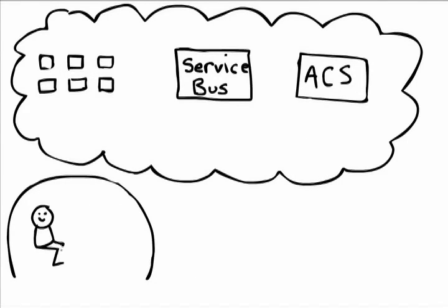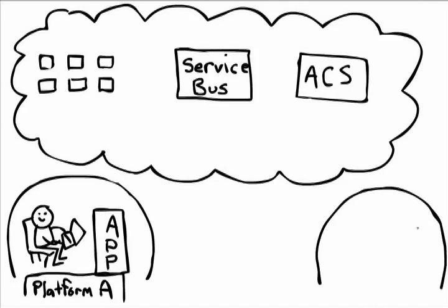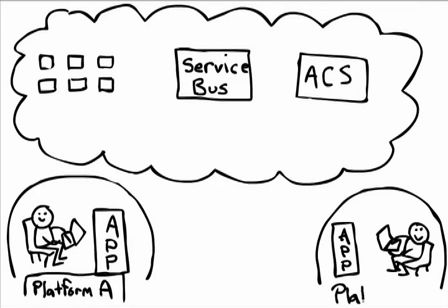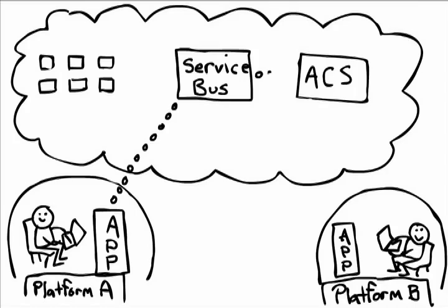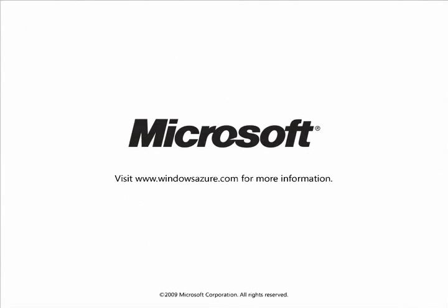You don't have to build these complex services — developers simply call them from within the application. And because the Access Control Service and the Service Bus are standards-based, they interoperate with multiple platforms. The Access Control Service and the Service Bus help take a lot of the complexity out of cloud computing, allowing you to connect users and applications beyond the firewall. Visit WindowsAzure.com for more information.